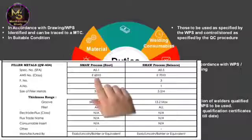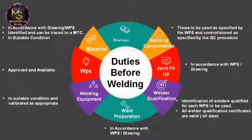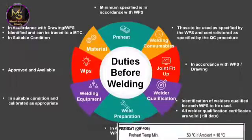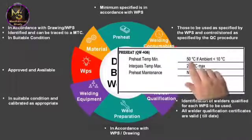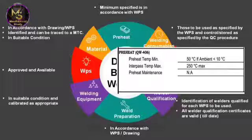For example, if you are working according to this WPS, before starting welding you should make sure the welder uses the E6010 electrode for the root pass. Preheat temperature should be a minimum as specified in accordance with the WPS. In this image, preheat temperature is specified as 50°C when ambient temperature is less than 10°C.